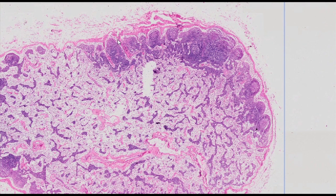The nodal parenchyma is differentiated into a peripheral cortex and a centrally located core. The deep cortex, also known as the diffuse cortex of the lymph node, rests between these layers.